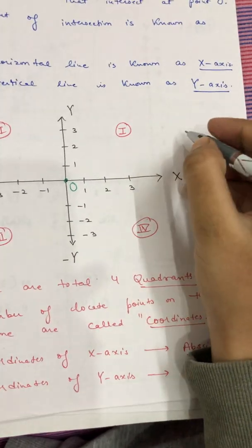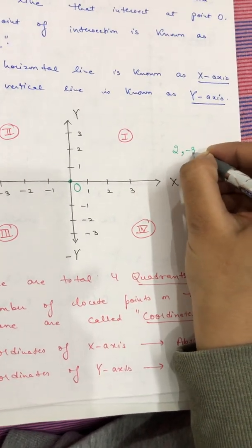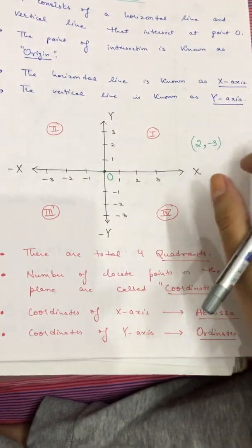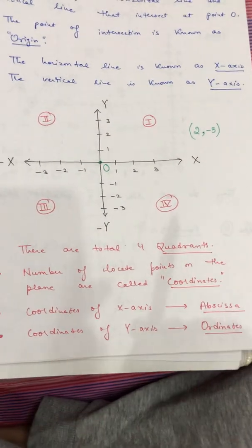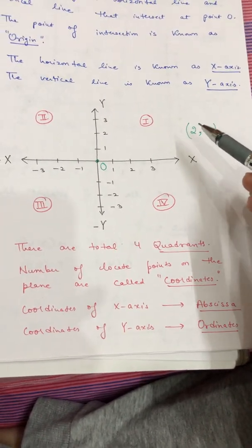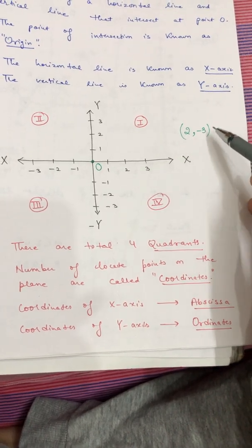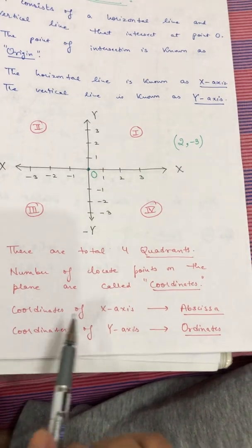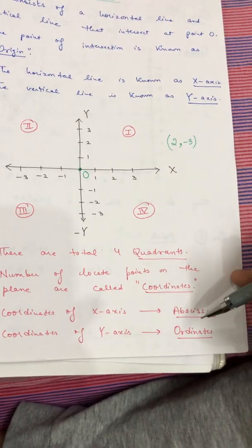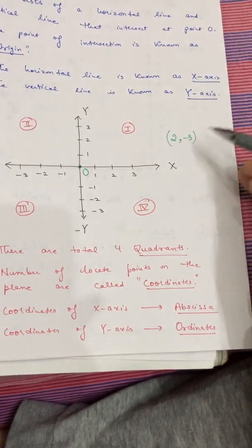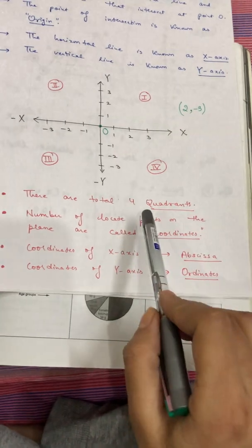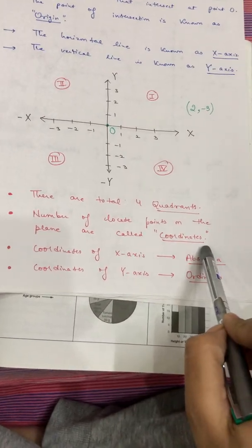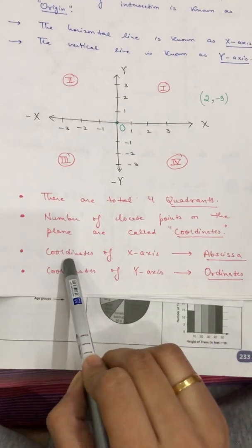Numbers used to locate points on the Cartesian plane are called coordinates. For example, the coordinate (2, -3): the first value always lies on the x-axis and the second value always lies on the y-axis. The coordinate of the x-axis is known as abscissa, and the coordinate of the y-axis is known as ordinate. These are two very important terms of the Cartesian plane.